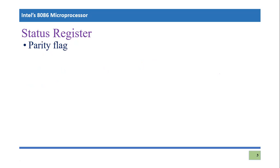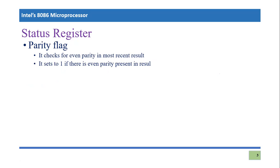The next flag is the parity flag. It checks for parity — whether, in the most recent arithmetic or logical operation result, the parity is even or odd. It is set to one if there is even parity. So whenever the result has even parity, the parity flag will be one. If it has odd parity, it will remain zero.